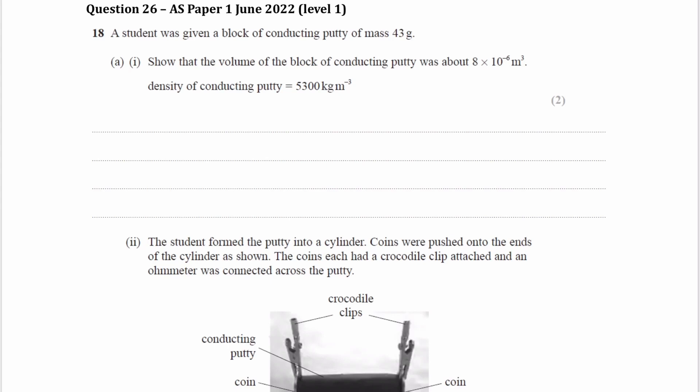So we have a conducting putty of mass 43 grams. Let's put that in kilograms, 0.043 kilograms. We want to show that the volume of the block is 8 times 10 to the minus 6. And we're told the density is 5,300.